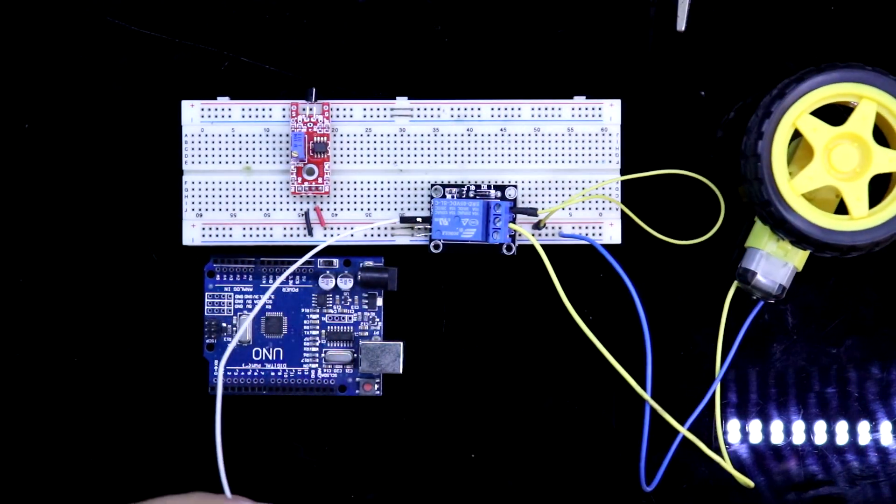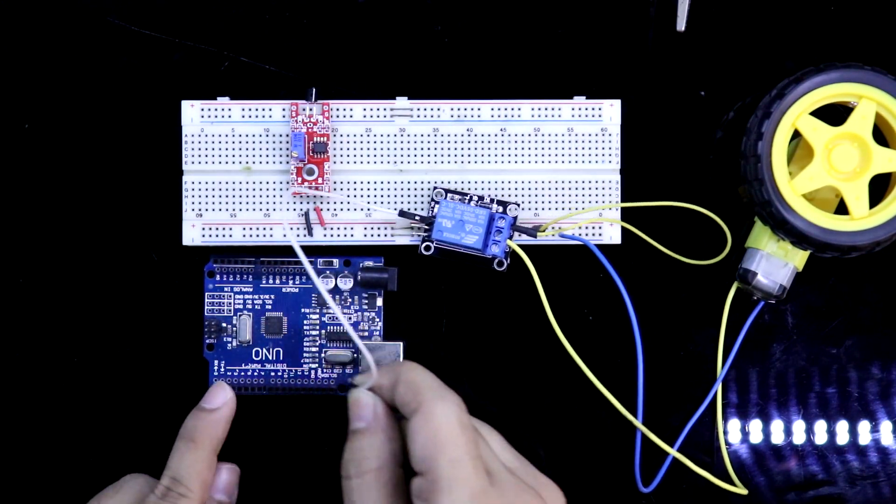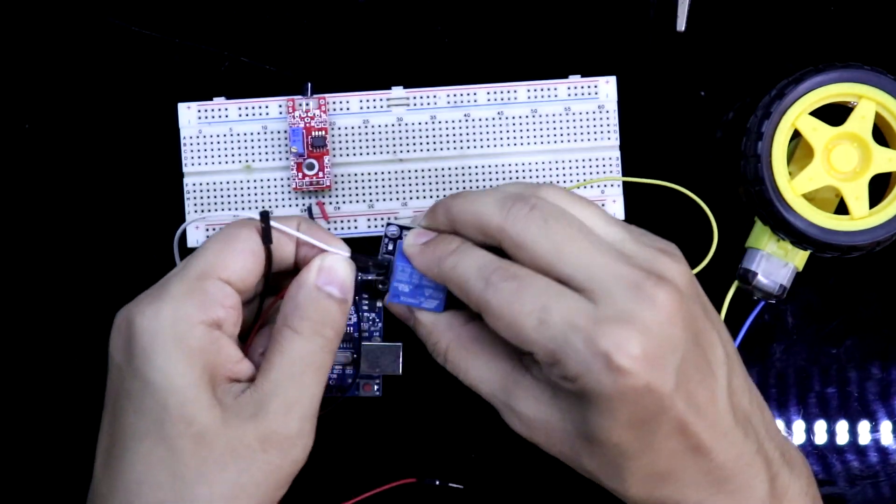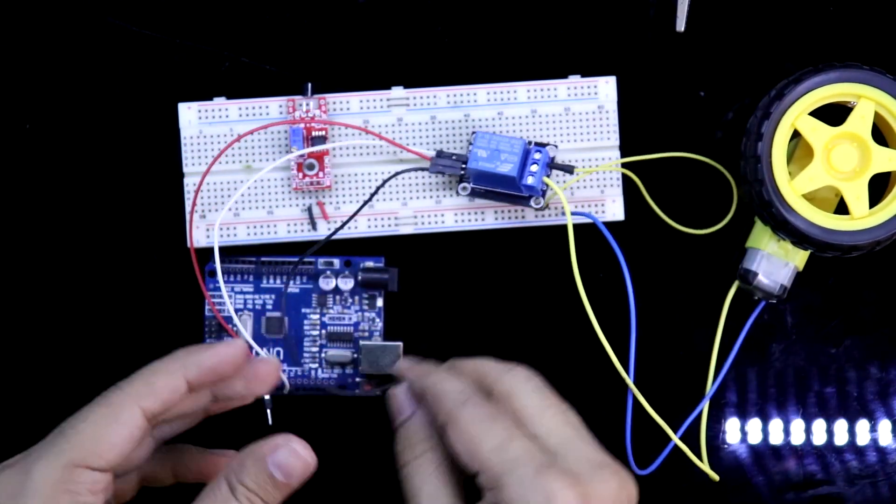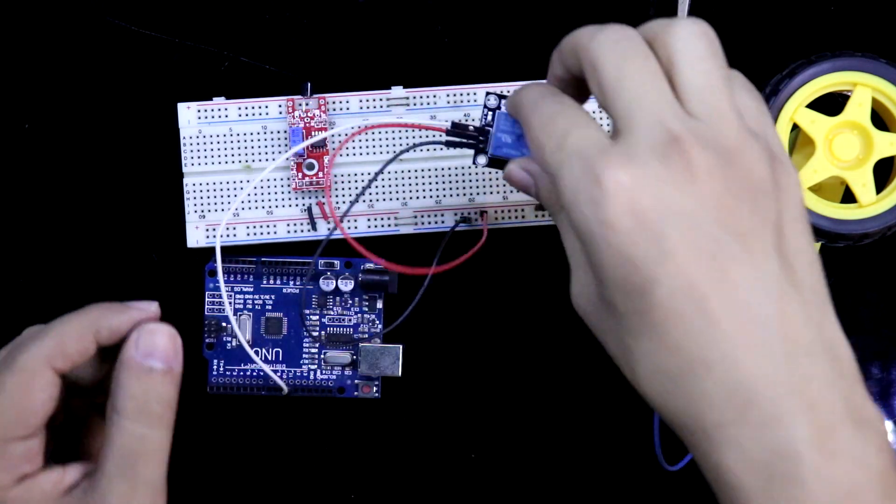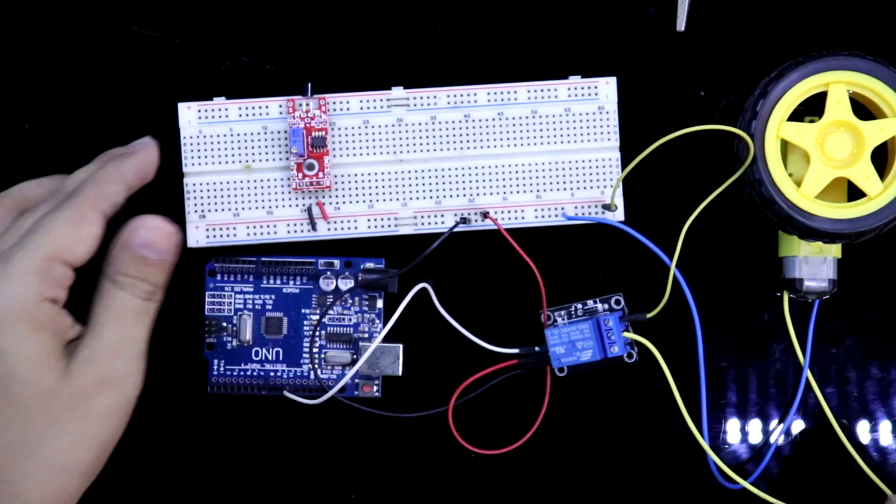Here is the signal pin and it is connected to the Arduino pin 11. Relay positive and negative to the positive rail and negative rail. So relay connection is completed.